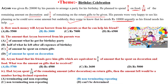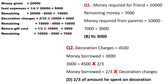Let's start the solution. Money given: Rs 20,000. Food expenses: one-fourth of 20,000 = Rs 5,000. Remaining money: 20,000 − 5,000 = Rs 15,000. Decoration charges: 3/10 of 15,000 = Rs 4,500. Remaining money: 15,000 − 4,500 = Rs 10,500.